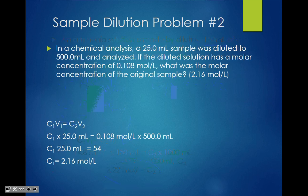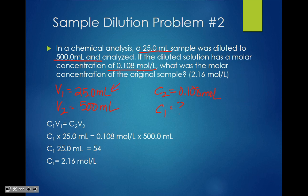Here's another dilution example: in a chemical analysis, a 25.0 milliliter sample was diluted to 500 milliliters. V1 = 25.0 milliliters, V2 = 500 milliliters. The diluted solution has a molar concentration C2 = 0.108 moles per liter — I'm looking for C1. Keep in mind that V1 is always the lesser amount because if something has been diluted, more water was added. And C1 is always the higher number because it's the concentrated amount; when you add water, concentration goes down.